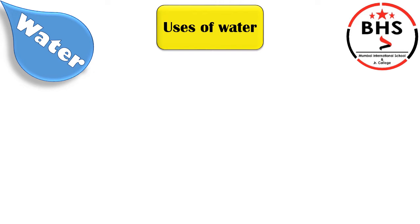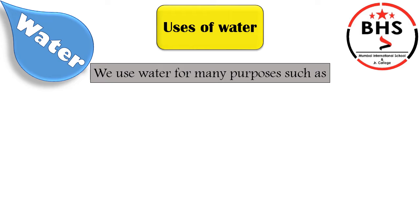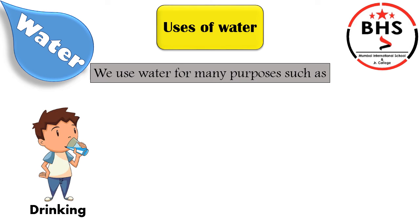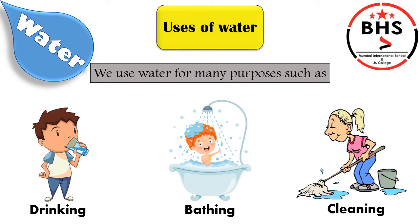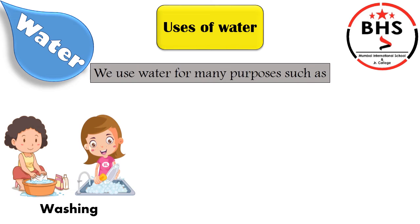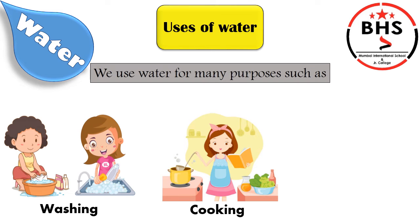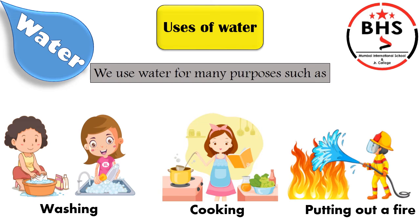Now Part 2, that is Uses of Water. Children, for what do we use water? We use water for many purposes, such as drinking, bathing, cleaning, washing clothes and utensils, cooking food, putting out a fire, and so on.